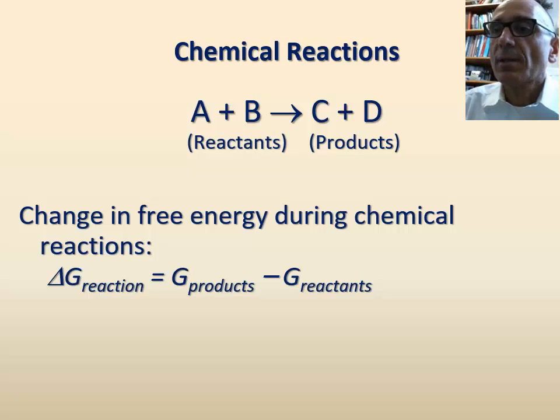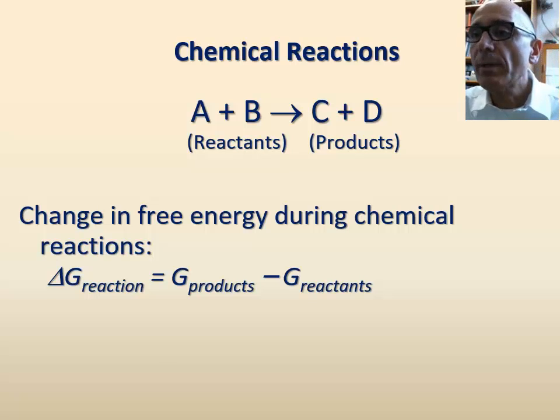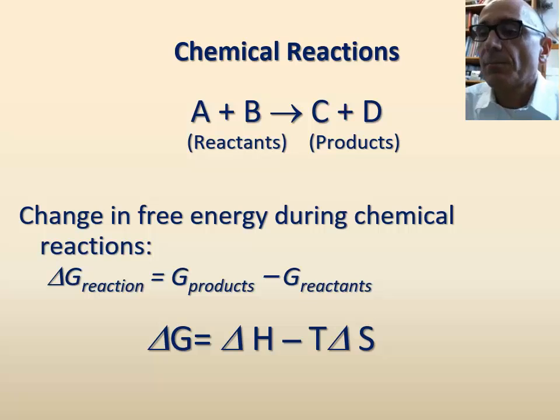Therefore, the equation that shows the difference in free energy following chemical conversions would become as such: Delta G equals delta H minus T delta S.